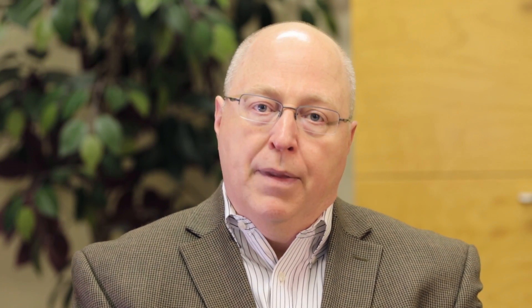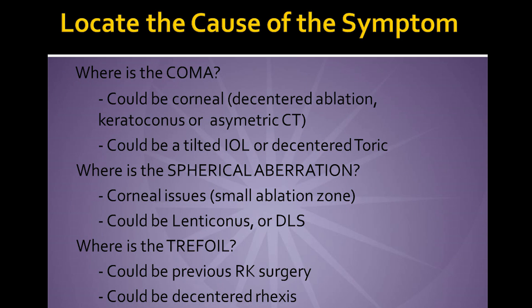For example, if you have coma, it could be from the cornea or it could be from the lens. The eye trace will show you where the coma is. So if you have blur and double vision and you know it's coming from the cornea, it could be a combination of either a de-centered ablation, it could be keratoconus, or it could be other things.